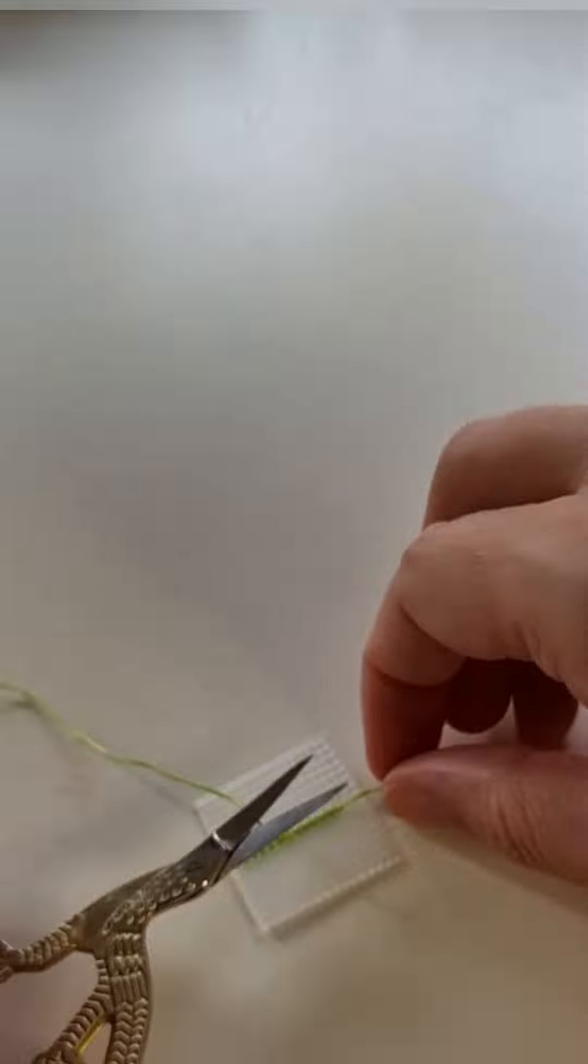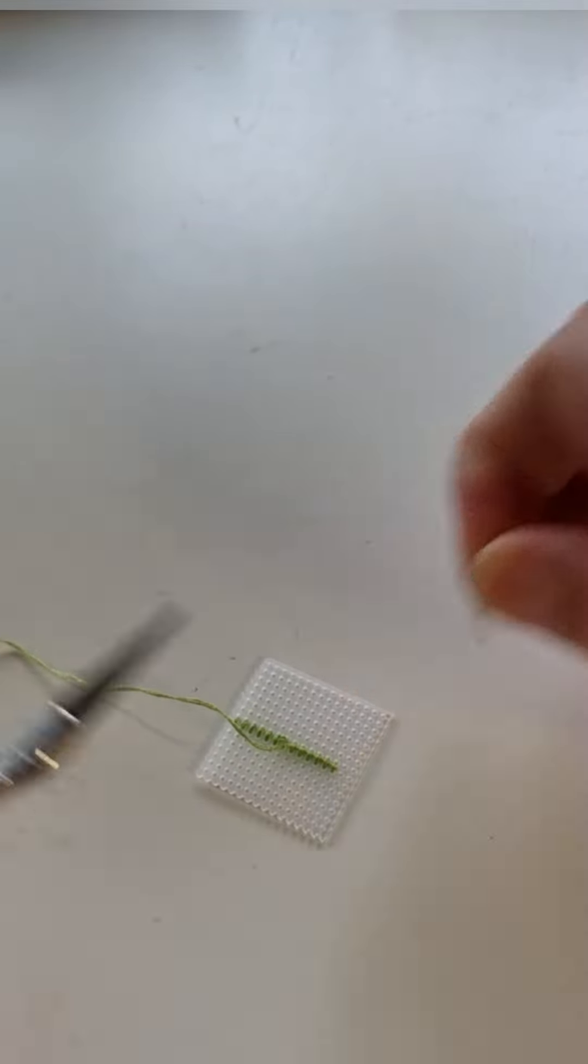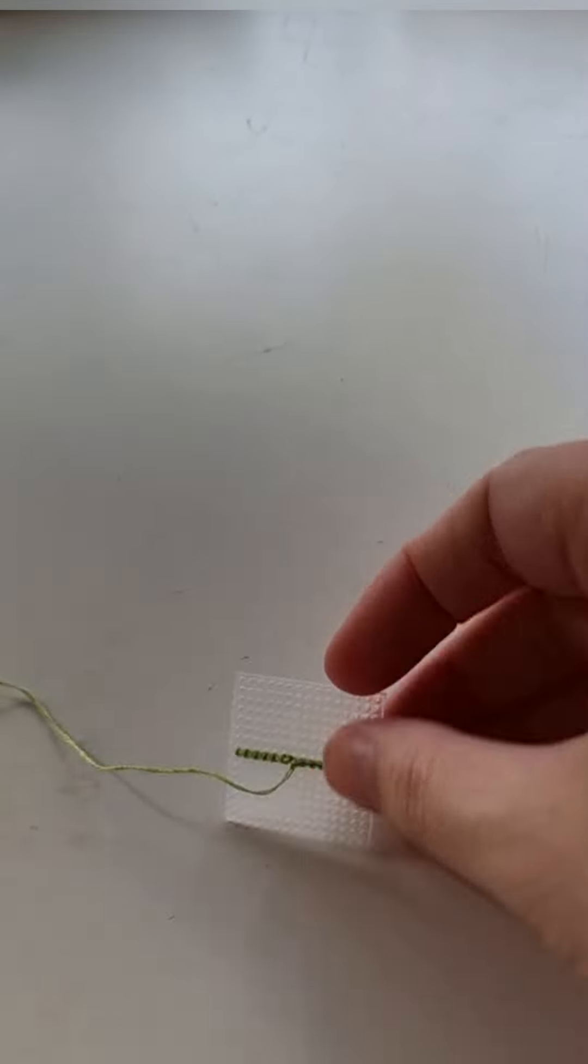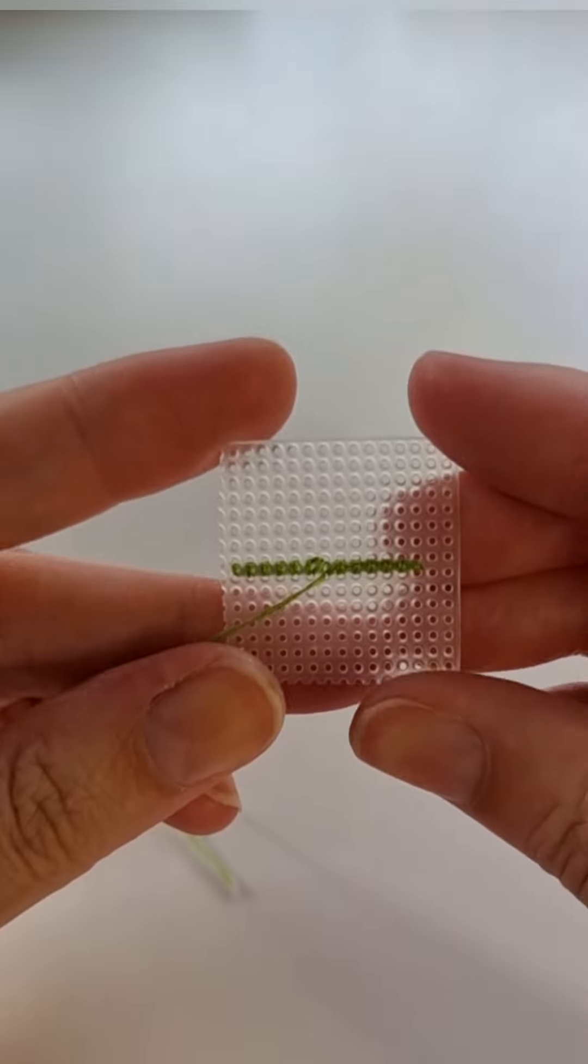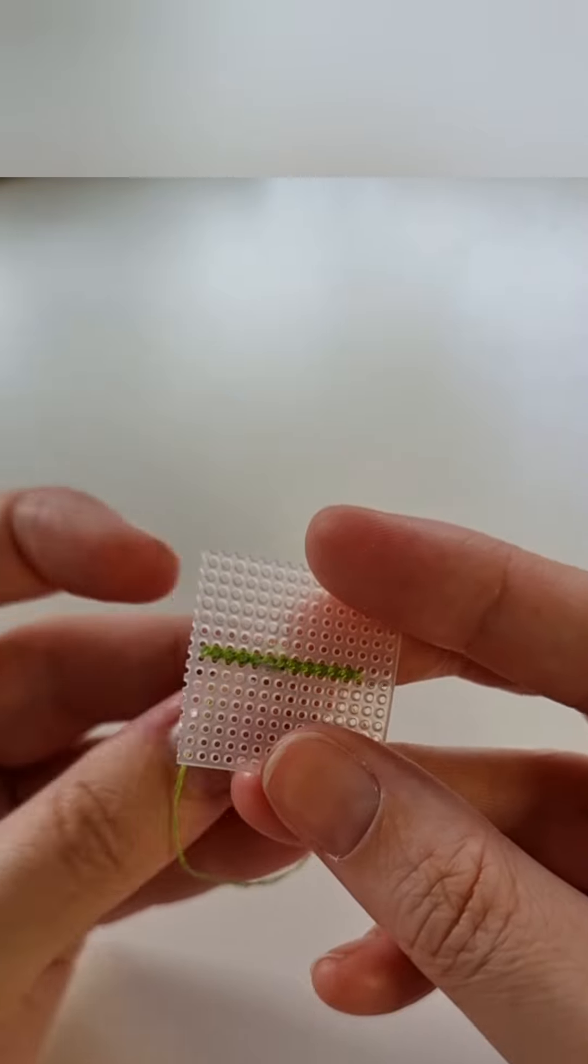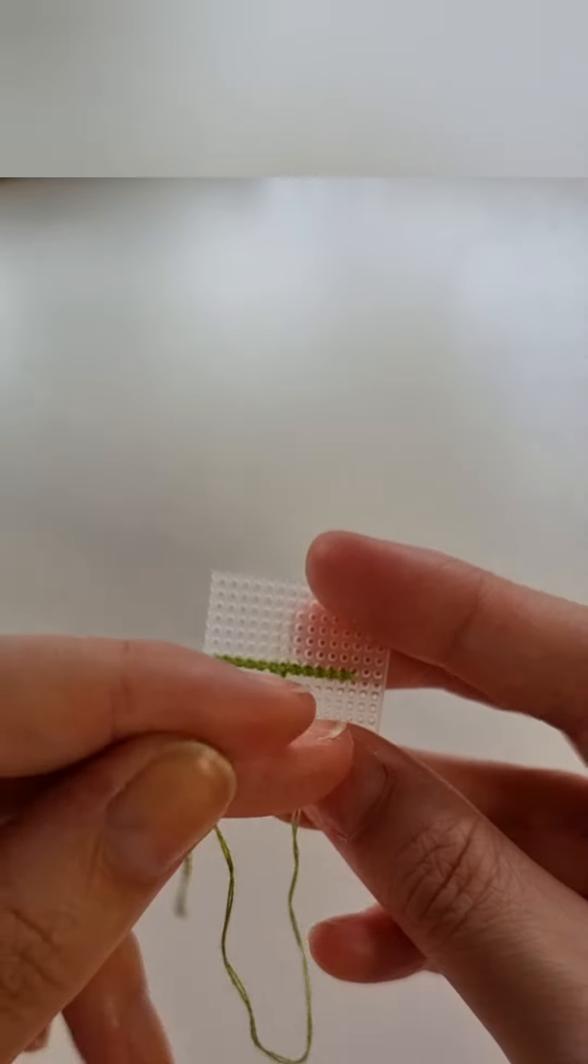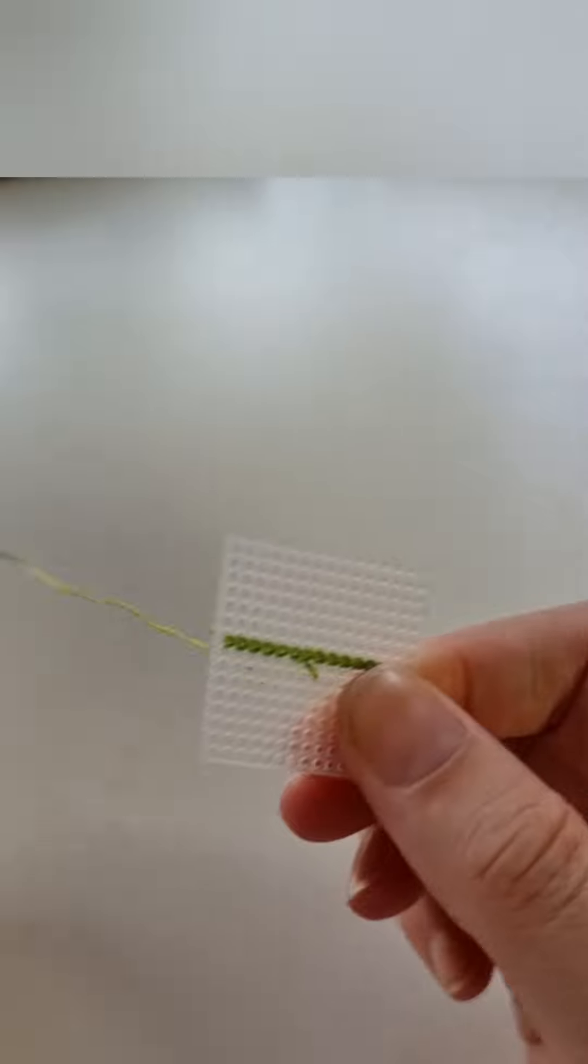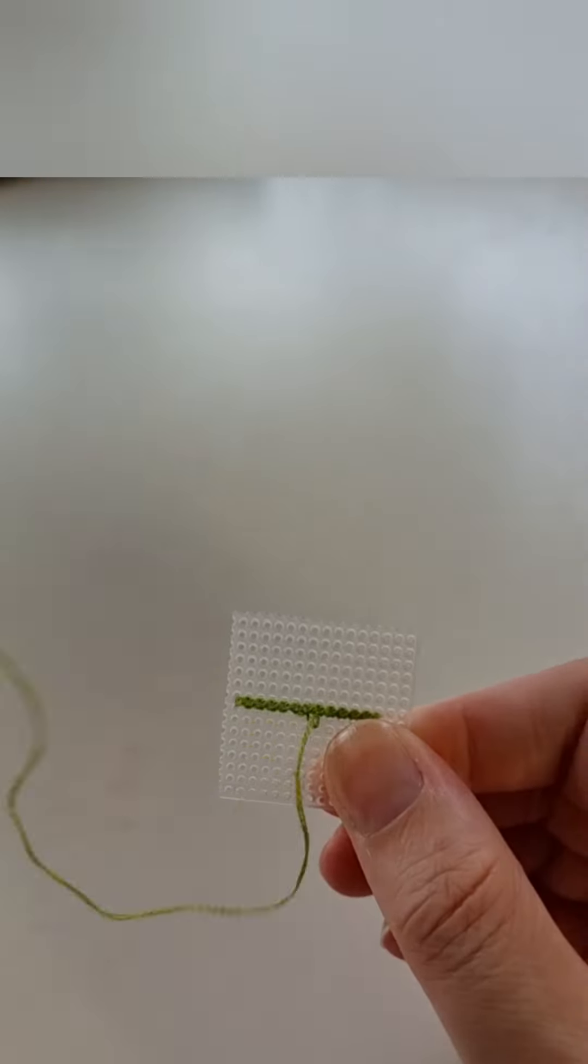I've now finished one row of green stitches so I'm going to snip off the excess thread so that it's not in my way. I'll continue stitching with the next row of green and make my next line.